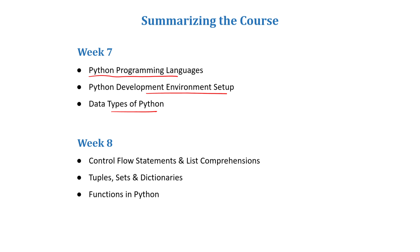In Week 8, control flow statements and list comprehensions in Python were discussed — variables, statements, commands, and data types including numbers, strings, lists, and slicing. Loop control flow statements such as for, while, if, elif, and else, including nested statements, were covered. Different data structures — tuples, sets, and dictionaries — were discussed in the second lecture of Week 8, including set operators such as union, intersection, difference, and symmetric difference, as well as how to retrieve commands from dictionaries.